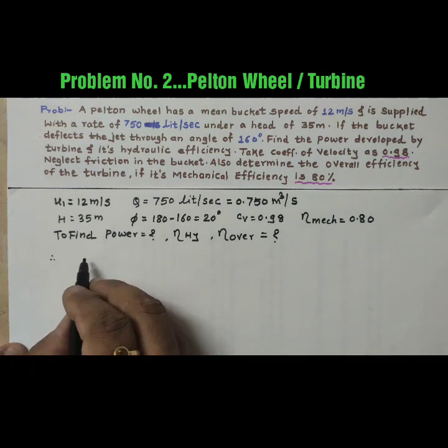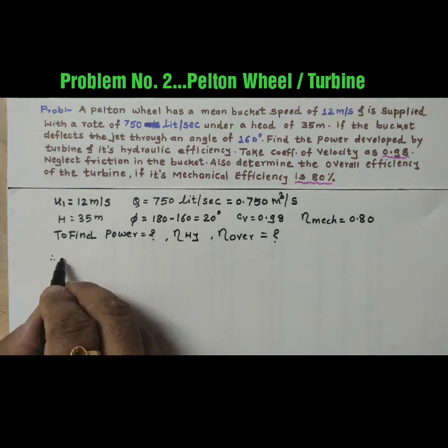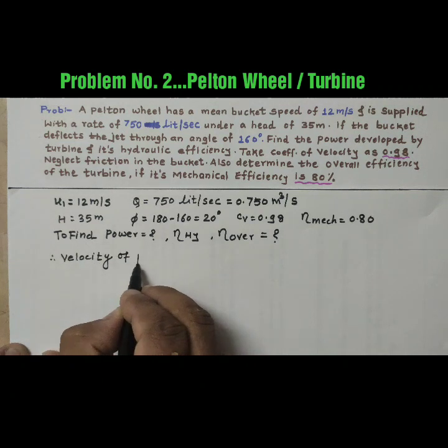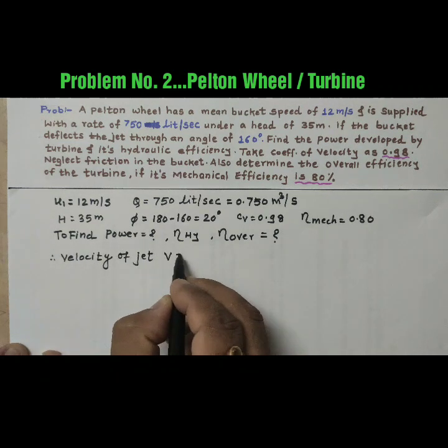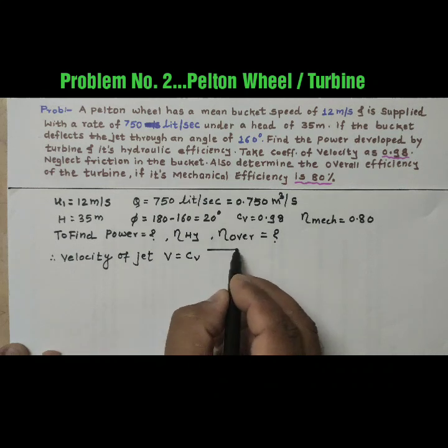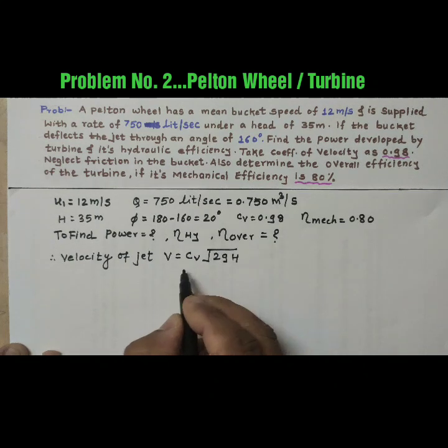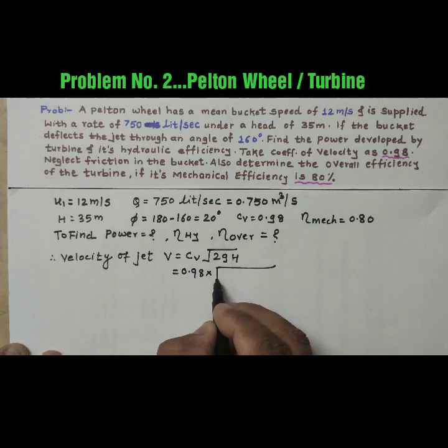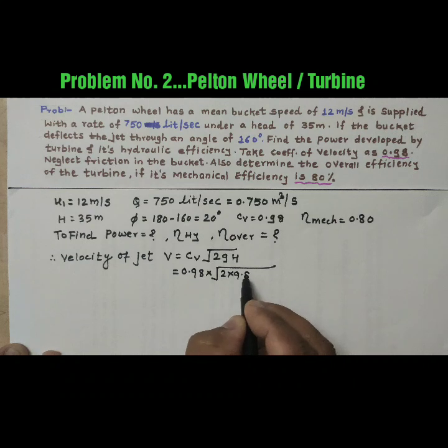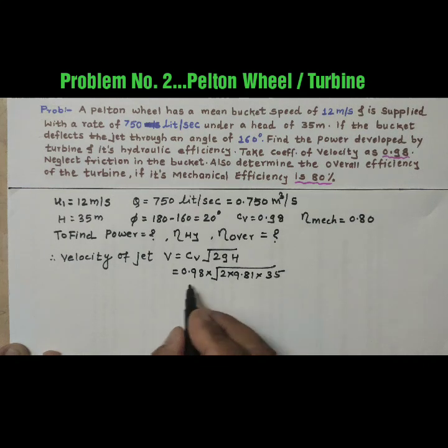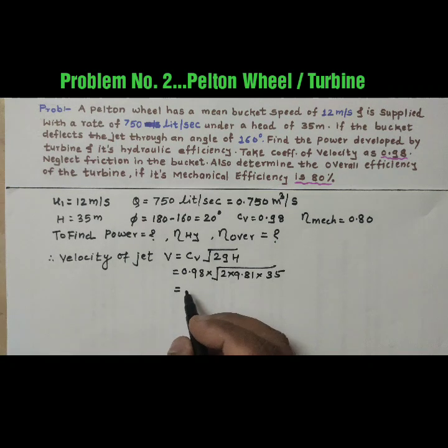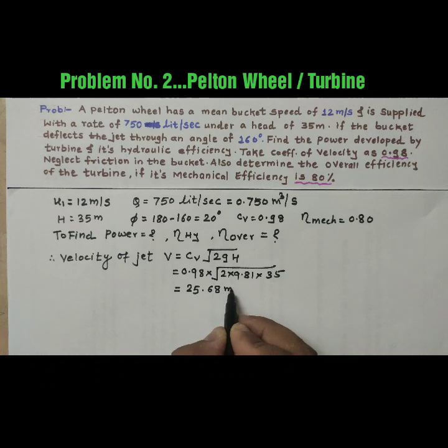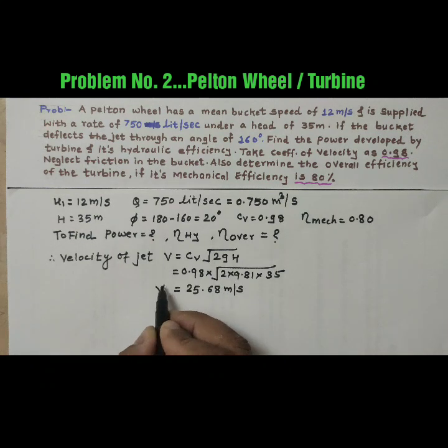First of all, for power we required V, so calculate velocity of jet. Velocity of jet we will get V equal to Cv into square root of 2gH. So Cv is 0.98 into 2 into 9.81 into head is 35. So by calculating we will get 25.68 meter per second, that is V.